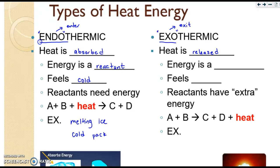Exothermic reactions, instead energy is a product because it's leaving the reaction. Therefore, the reaction is going to feel hot. We say that the reactants have extra or too much energy, so they have to get rid of some of it. And you'll notice the heat is on the product side here. Heat is usually provided as kilojoules. And then some examples here would be anything that's burning or the formation of a hot pack.